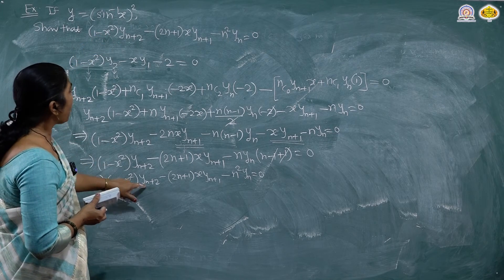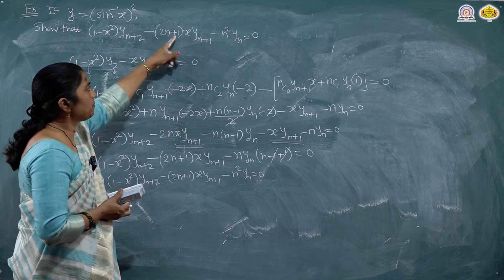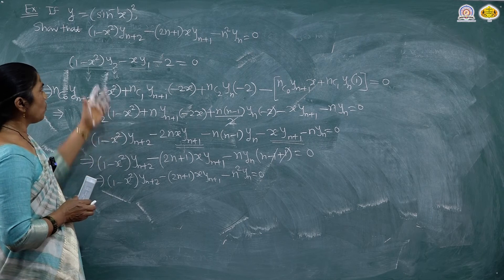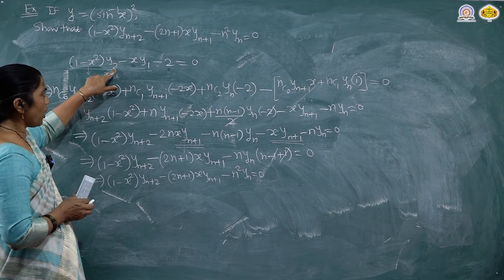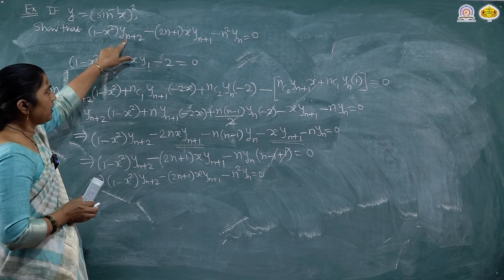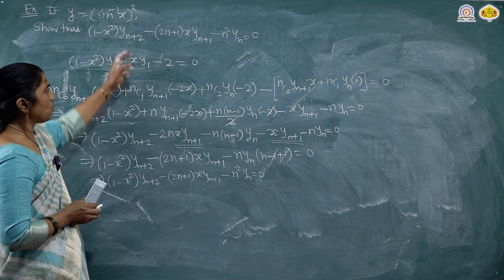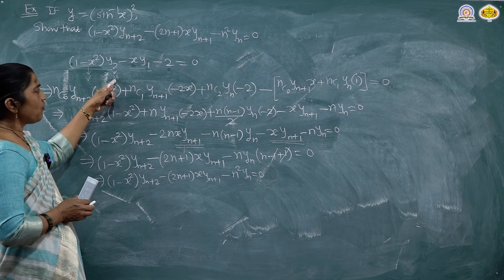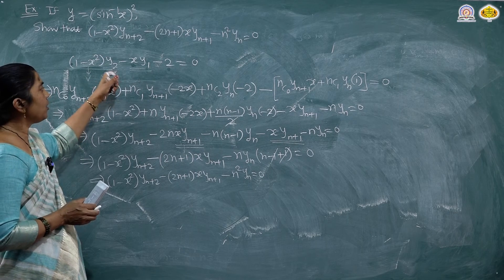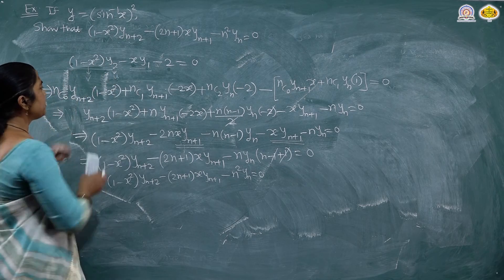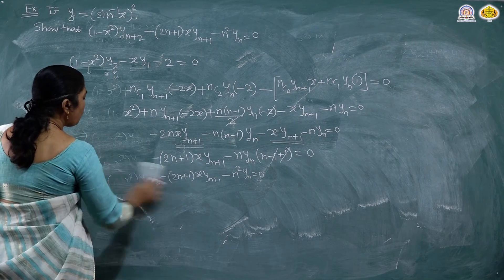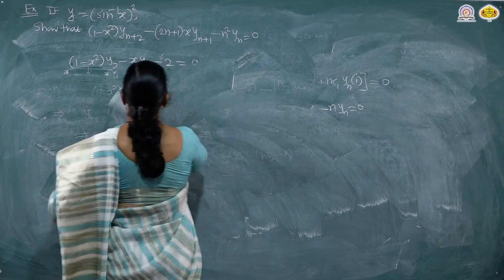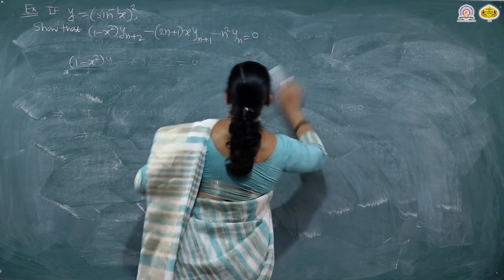So it is: (1 - x²)·y(n+2) minus (2n+1)·x·y(n+1) minus n²·yn equal to 0. We differentiated twice to get y2, then differentiated n times to get y(n+2). While differentiating using Leibniz theorem, we take u as the first function whose nth derivative we know, and v as the function whose derivative vanishes in finite steps. So we are able to prove the result.